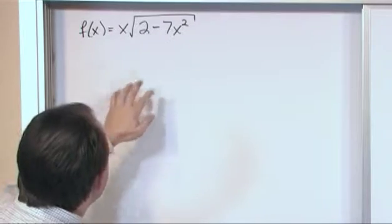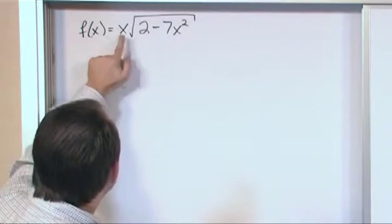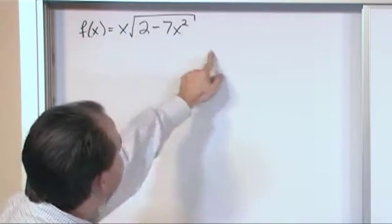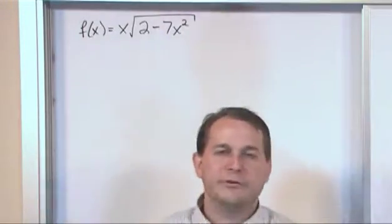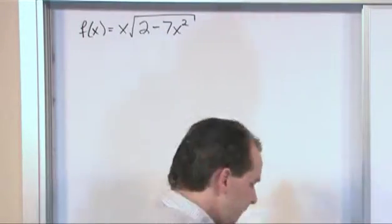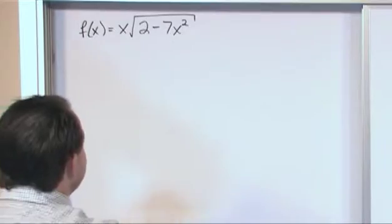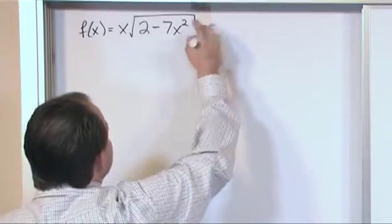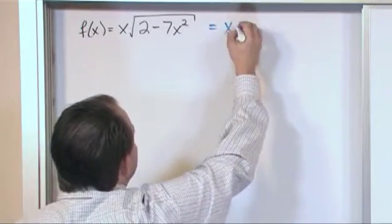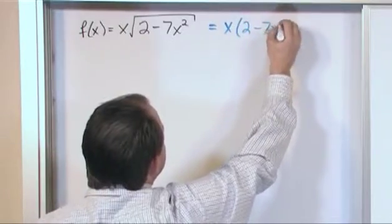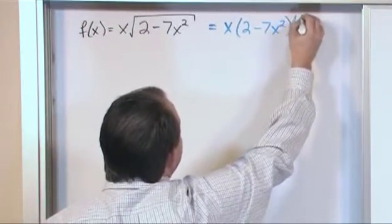But to make it even harder, on the outside of this we have another function, x. So a lot of students might look at this and really don't know where to start, but you have to peel back the onion. First thing I always tell people to do is always rewrite these functions with radicals as the following in this case: 2 minus 7x squared to the 1 half.